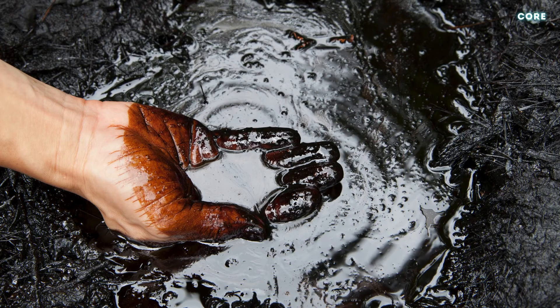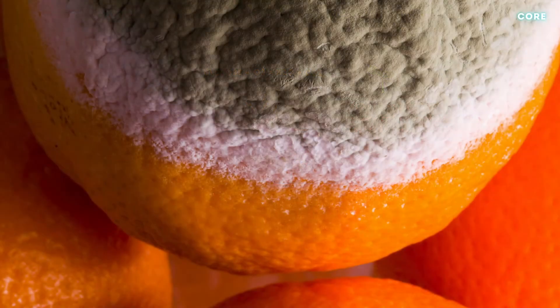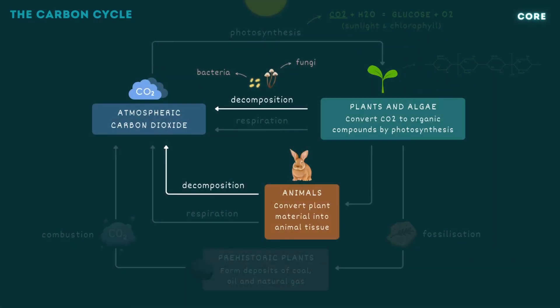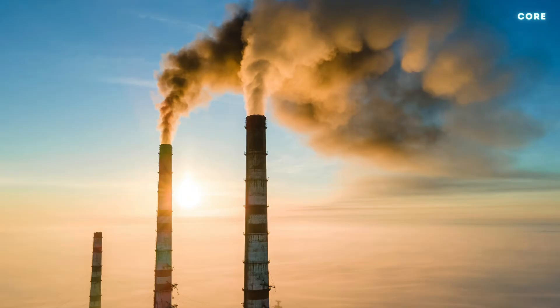Fossil fuels therefore contain carbon that was originally removed from the atmosphere through photosynthesis. When living things respire, carbon dioxide is released back into the air. Plants and animals obtain their energy through respiration using glucose and oxygen in their cells. The byproducts of respiration are water and carbon dioxide, which is excreted and returned to the atmosphere. Carbon is also released through decomposition. Decomposers like bacteria and fungi break down dead organic matter including undigested material and release the carbon back into the atmosphere as carbon dioxide.